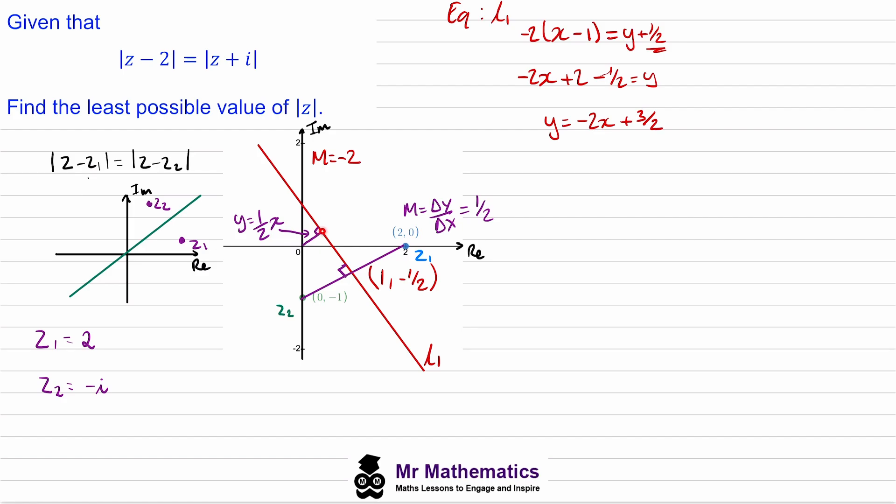At this point, this equation will equal this equation, so 1/2 x will equal negative 2x plus 3/2. We can move this negative 2x to the left hand side, so 5/2 x will equal 3/2.